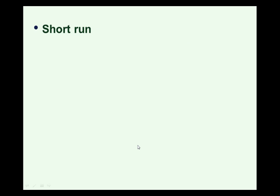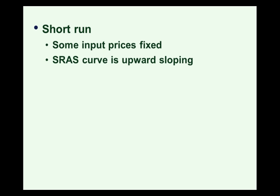Let's start by distinguishing between the short run and the long run. In the short run, some input prices are fixed, and the short run aggregate supply curve is upward sloping. With input prices fixed because of contracts, formal or informal arrangements, when prices rise, costs don't rise by as much, and producers have a higher profit margin. They're willing to supply more, so the short run aggregate supply curve is upward sloping.